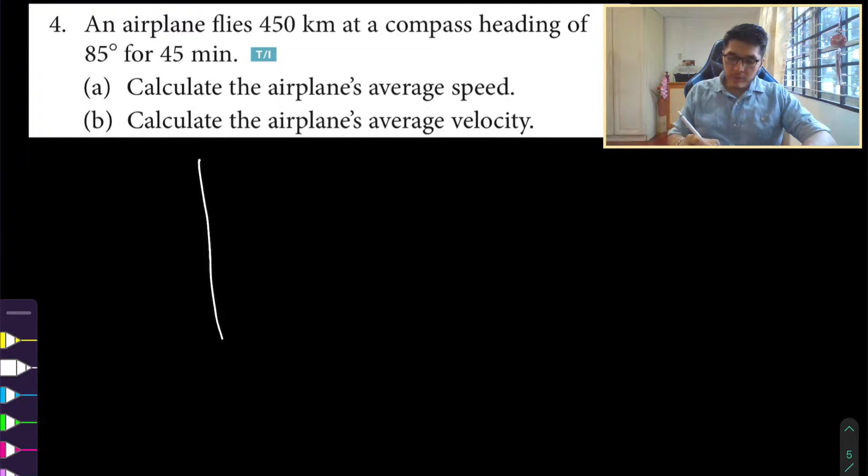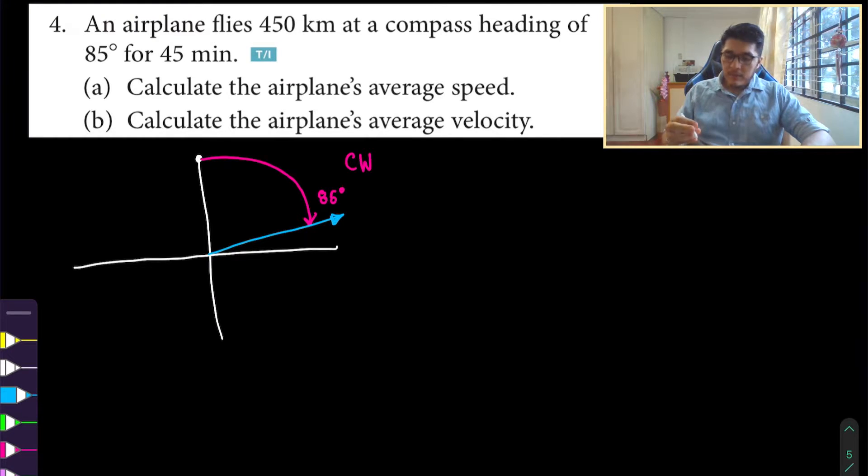An airplane flies 450 kilometers at a compass heading of 85 degrees for 45 minutes. First, let's try to recall what the compass heading represents. If we imagine your x and y coordinate system, the compass is always read from the very top. So from the very top, you measure out 85 degrees rotating clockwise.